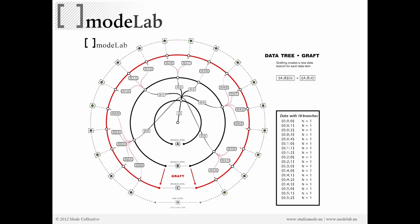As opposed to before where we had three elements on path 0.5, we're going to break that into individual lists by growing our data tree one more branch level through the graft operation. In this case we'll have one item on the end of every list, and if we bring two grafted trees together, we'll have two items on the end of every list.